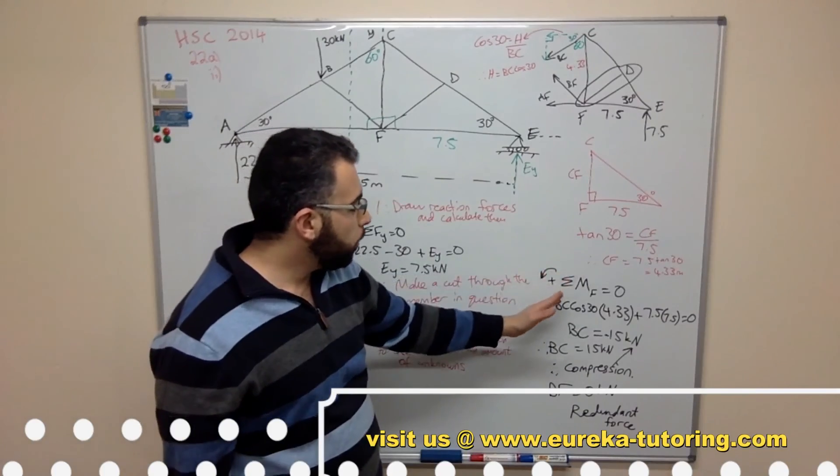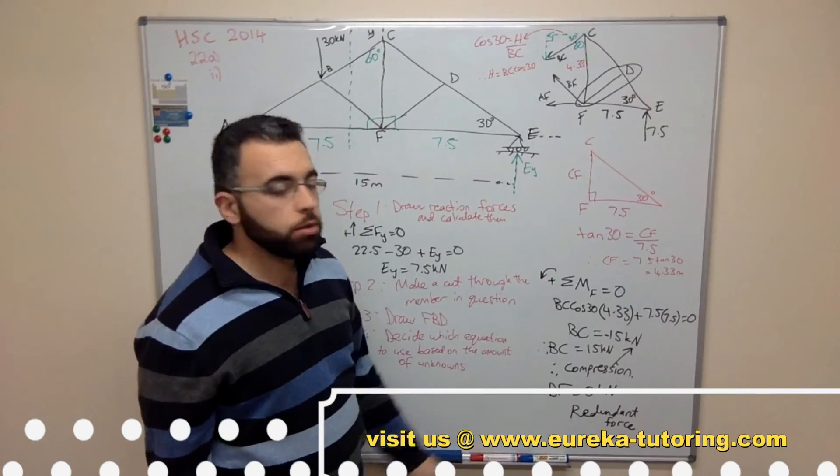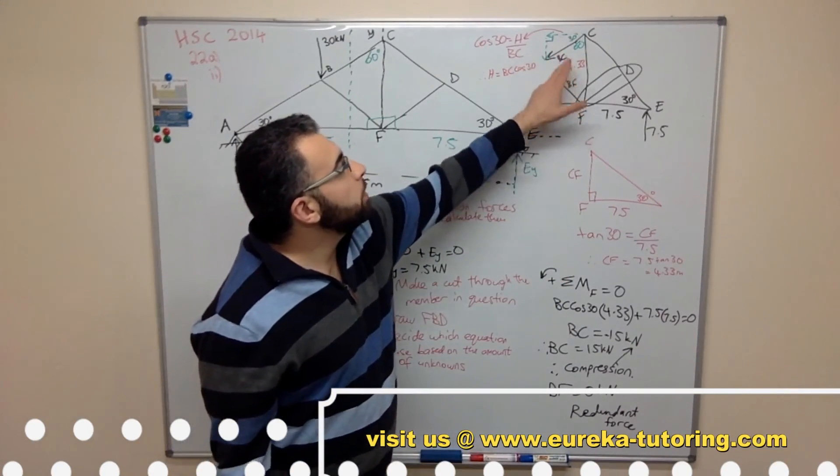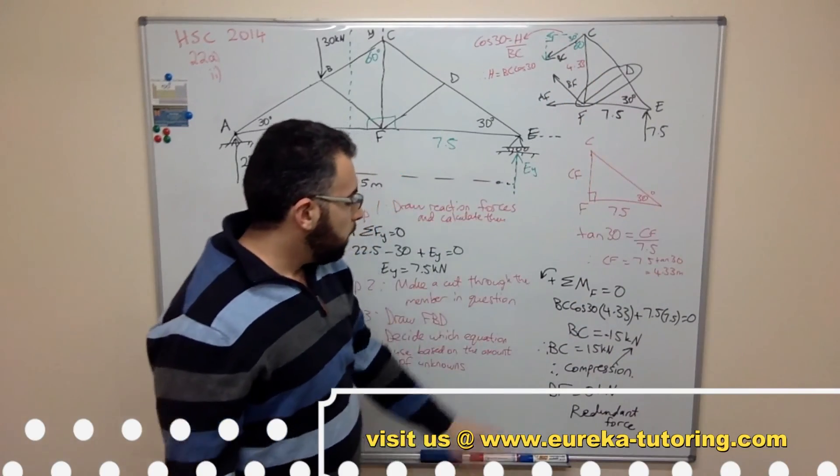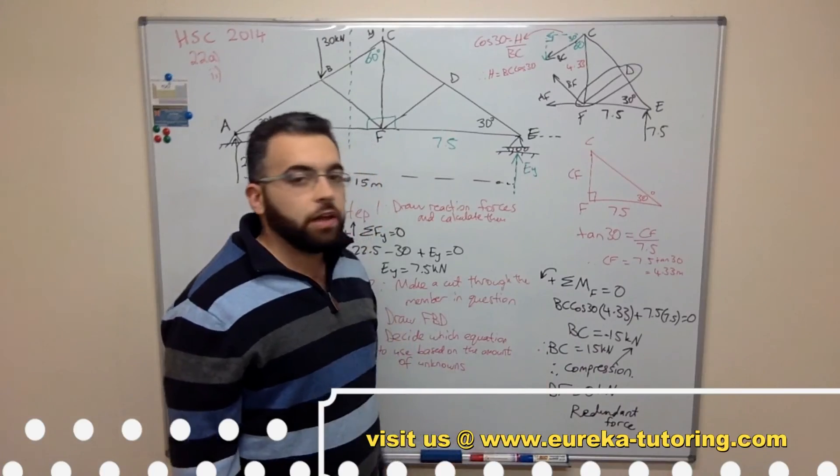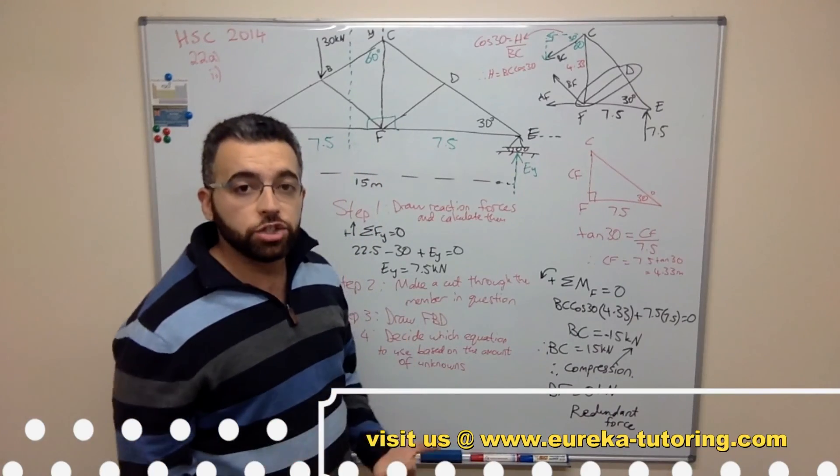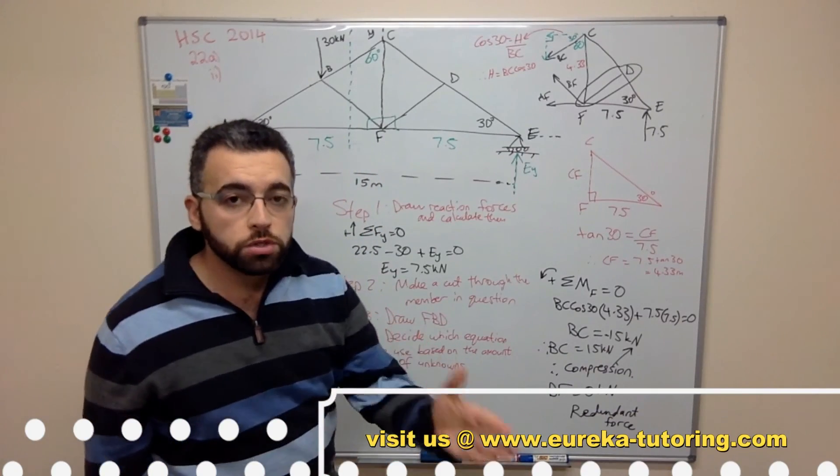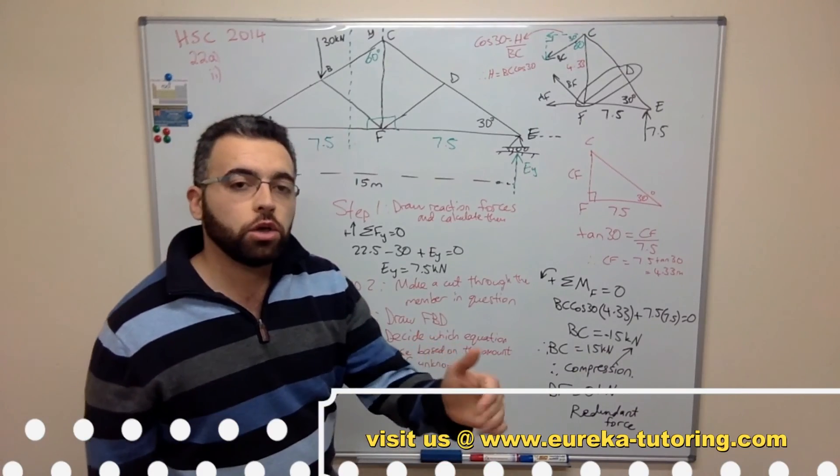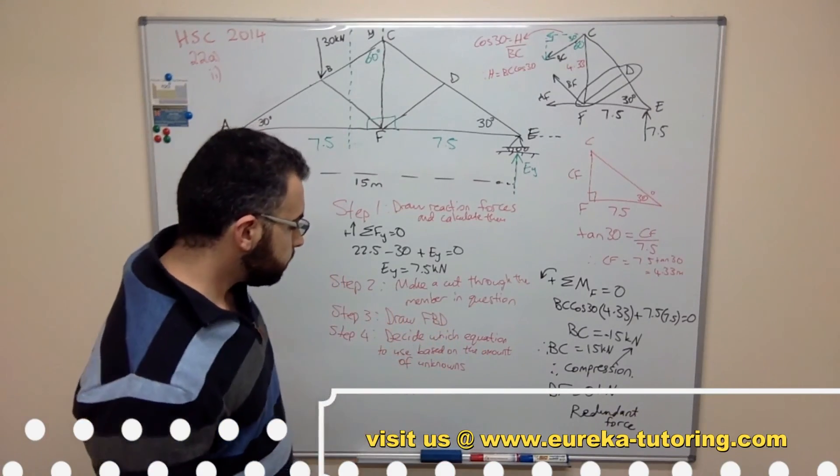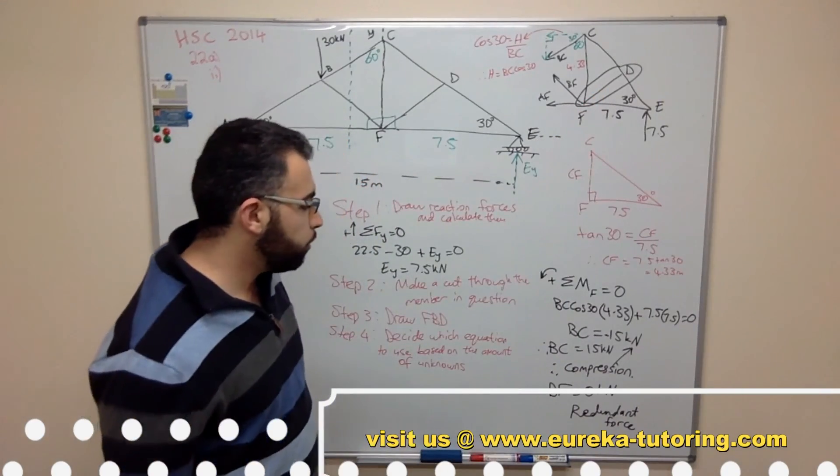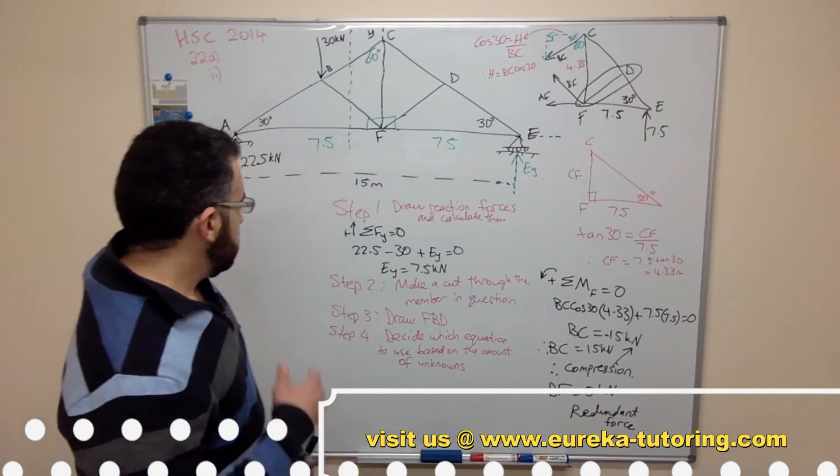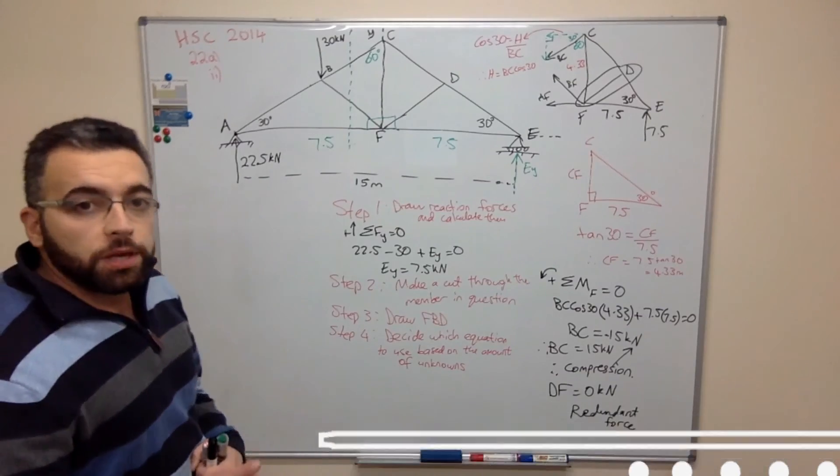And then consider how many unknowns we have and then use the appropriate equation, which in this case was the sum of moments. Get rid of these two forces, leaving you with one unknown and this force which also creates a moment. And from that you can calculate the value of BC. Now with the nature, the force that goes towards the joint is compression, force that goes away from the joint is tension. And with DF there is no force, hence it's zero, and we call that a redundant force. And that should be it.